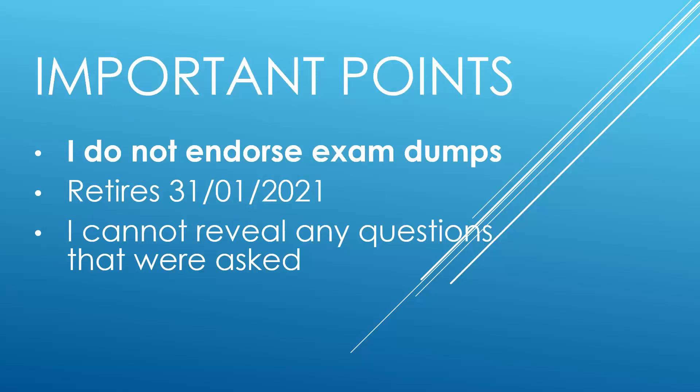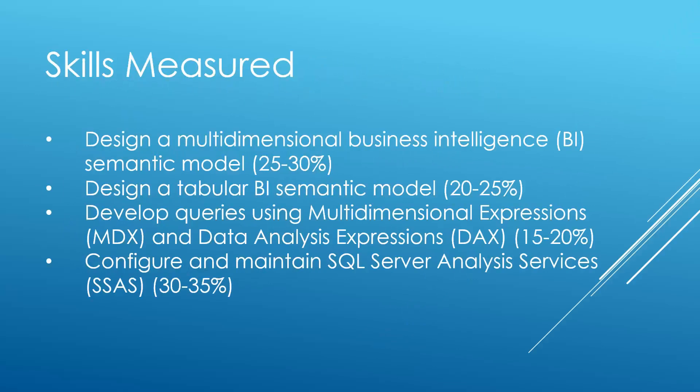We'll have a look at the skills measured — you can further break this down by downloading the exam skills outline from the Microsoft website, which I'll link in the description. The percentages are within a range and can add up to above a hundred percent, so they're just an indication of the amount of questions in each area. The first skill is designing a multi-dimensional business intelligence semantic model, which makes up about a quarter of the exam.